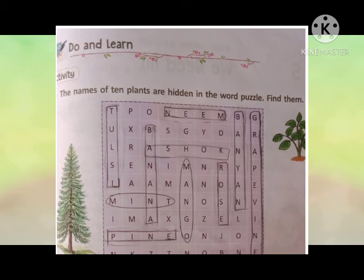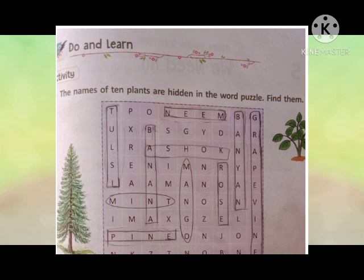Yeh aapko 10 words — plants ke ho gaye hain. Wo aapko achhi tarah se circle karna hai — square shape mein ya round shape mein. Again I repeat the names: Tulsi, Banana, Mint, Mango, Neem, Banyan, Grapevine, Ashok, Pine, Rose. Aapko yeh 10 words find karne hain.